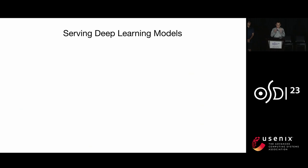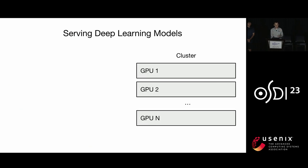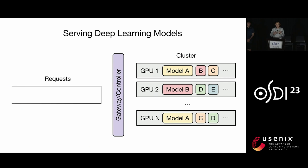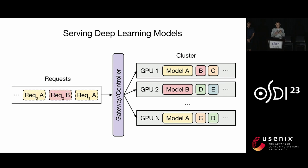A deep learning serving cluster typically has the following structure. Given a GPU cluster, we put deep learning models onto the different GPUs and possibly replicate some models. We also have a gateway or controller to dispatch the requests. The incoming request will first go into the request queue, and the gateway will dispatch it to a GPU that has the requesting model's replica. Then the GPU will execute the request and return the results.